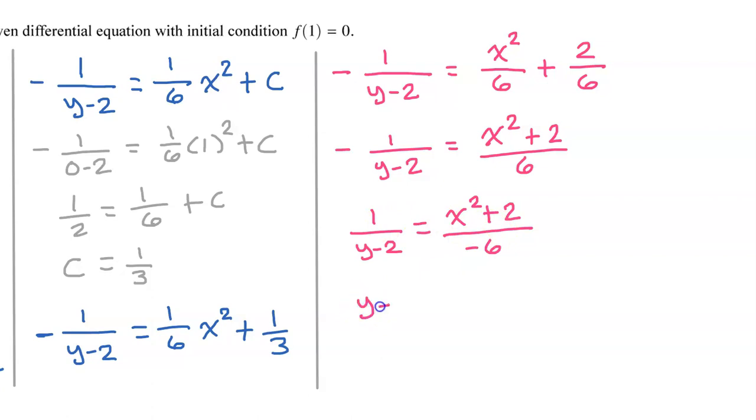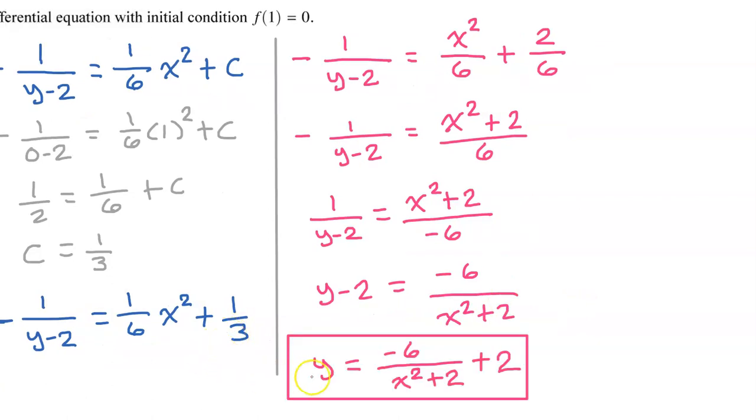So on the left side, I will have y minus 2. And on the right side, I have negative 6 over x squared plus 2. All I have to do now is add 2 to both sides of the equation. So here is the particular solution to the differential equation which satisfies the initial condition written in the form y equals f(x).